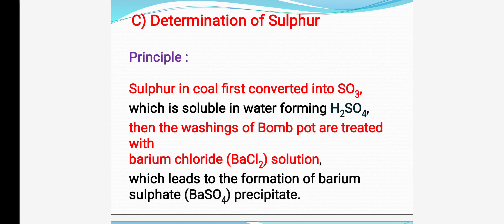Coal contains sulfur. Sulfur in coal is first converted into sulfur trioxide. As you know, burning of coal takes place in the presence of oxygen, so sulfur reacts with oxygen and produces sulfur trioxide. The produced sulfur trioxide then dissolves in water. There is 10 ml of distilled water in the bomb pot, placed especially for dissolving the produced gases. After dissolution, it produces H2SO4 inside the bomb pot.